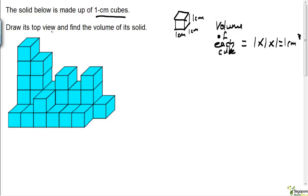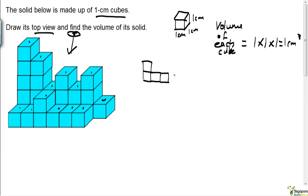Draw its top view. Imagine looking at this solid from the top. You have one, two, three, four, five, six, seven, eight, nine, ten, eleven, twelve, and one sticking out here. The number of squares you would have to draw would be in a six by two formation.